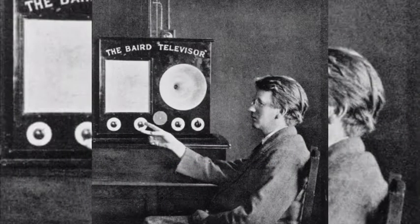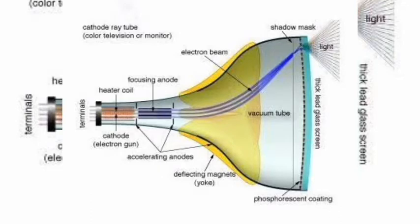The inside of the screen is coated with strips of phosphors — chemicals that glow three different colors when electrons hit them. Three electron guns at the back of the television fire beams of electrons at the three sets of phosphors behind the screen, which illuminate to create the picture. Each lens would focus a horizontal line from the image onto a photoelectric cell.